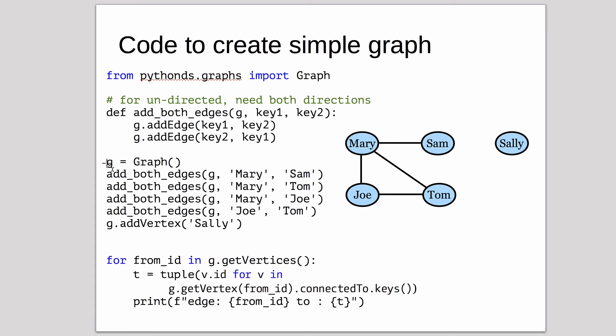Then we're going to add these edges. Here's our graph, and we just call both edges for each pair that we need. That's for each line I've called add edges. Sally has no edges, so we have to call add vertex.